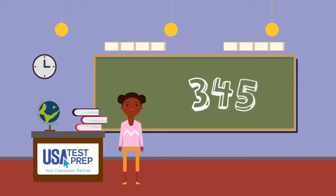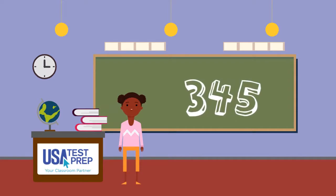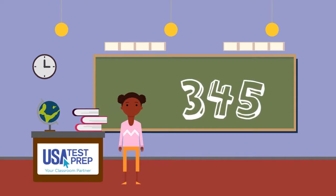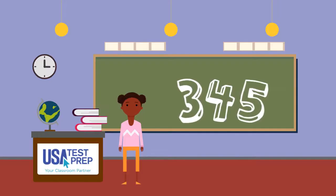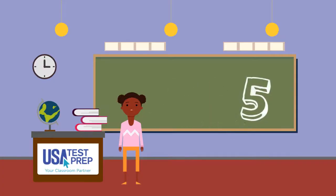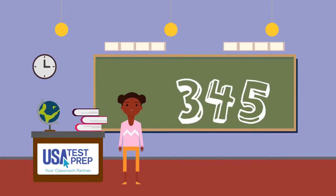Look at this number. This number is made of the digits 3, 4, and 5. Each number has a different place. The 5 is in the 1's place, the 4 is in the 10's place, and the 3 is in the 100's place.